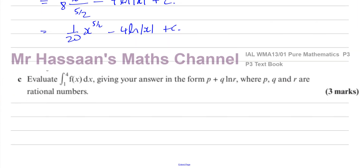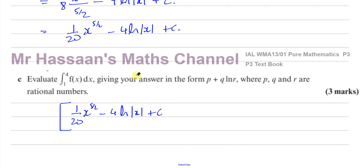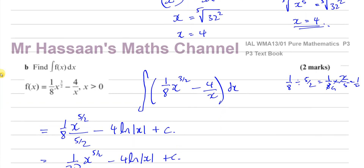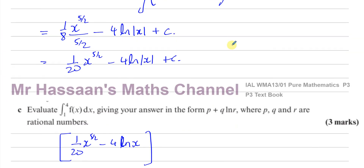Part c asks to evaluate this integral between 1 and 4. Taking the result from part b, I have 1 over 20 times x to the power of 5 over 2 minus 4 ln of x — with no plus c needed for a definite integral. Also, since x is greater than 0, I don't need the modulus of x. The modulus is only required when we're unsure whether x could be negative, since ln of a negative number is undefined.